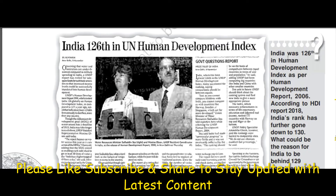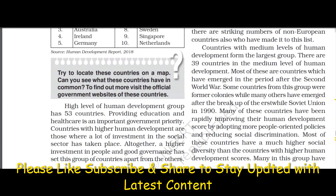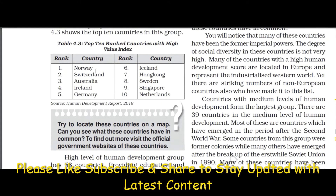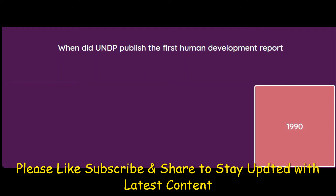There is a newspaper clipping shown in the book as well. The top 10 ranked countries with high HDI value are Norway, Switzerland, Australia, and Ireland among them. Next MCQ: When did UNDP publish the first Human Development Report? Options are 1989, 1991, 1980, or 1990. The answer is 1990.